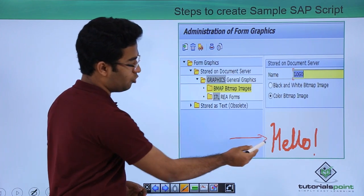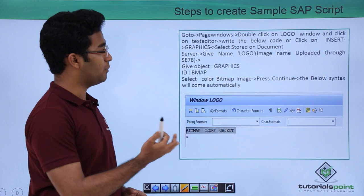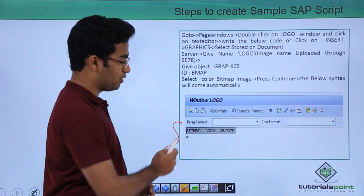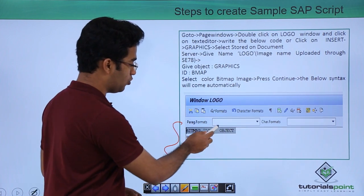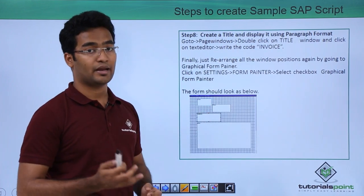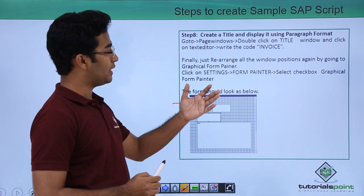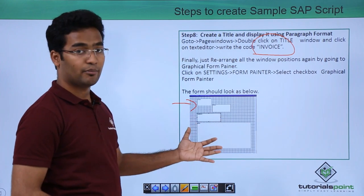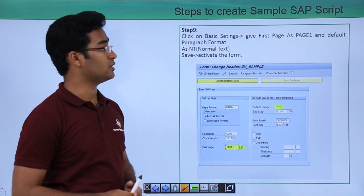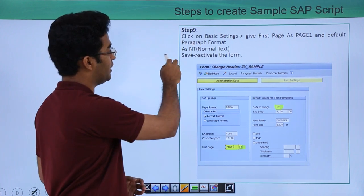We can see our output image coming — this is the image we have uploaded into SAP. The next step is to go to page windows, double-click on the logo window to import it into the SAP script. We provide the code: bitmap logo — where logo was the name we uploaded into SAP — and object. When done, we create a title and display it using paragraph format. We go to page windows, double-click on the title window, and write the code as invoice. The output comes and we can move or change the size of the windows. Finally, click on basic settings, give the first page as page 1 and the default paragraph format as NT.